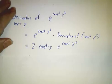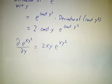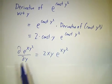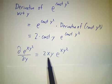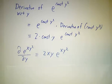And if the constant happens to be x, same game. The derivative of e to the xy squared is e to the xy squared times the derivative of xy squared, which is the constant x times 2y. That's all there is to it. One variable at a time takes care of all of your problems.